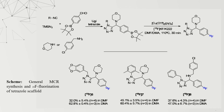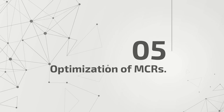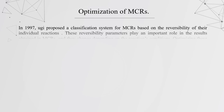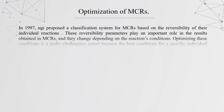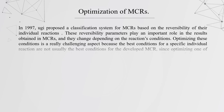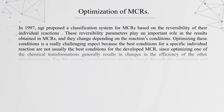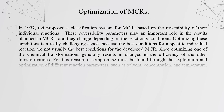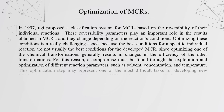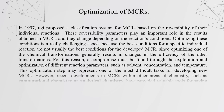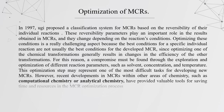In the fifth part, optimization of multi-component reactions is discussed. In 1997, Ugi proposed a classification system for MCRs based on the reversibility of individual reactions. These reversibility parameters play an important role in the results obtained, and they change depending on reaction conditions. Optimization is a challenging aspect because the best conditions for a specified individual reaction are not usually the best conditions for the overall MCR, since optimizing one transformation generally changes the efficiency of another. Therefore, a compromise must be found through exploration and optimization of different reaction parameters such as solvent, concentration, and temperature. This optimization step may represent one of the most difficult tasks in developing new MCRs.